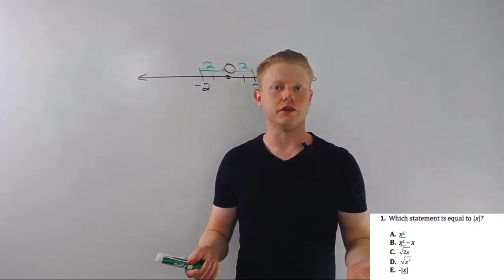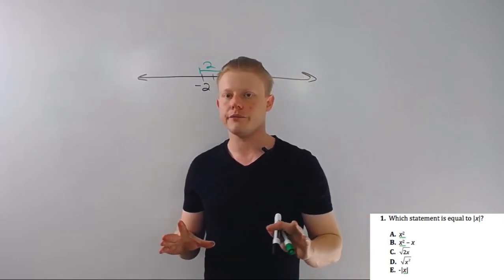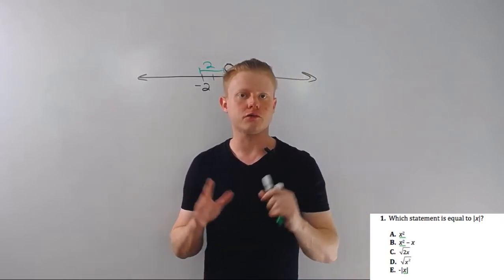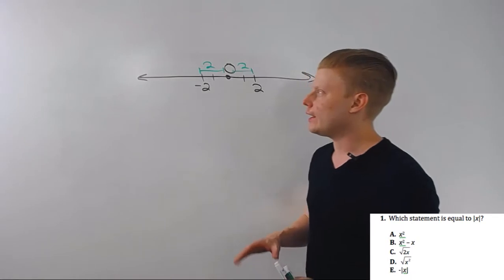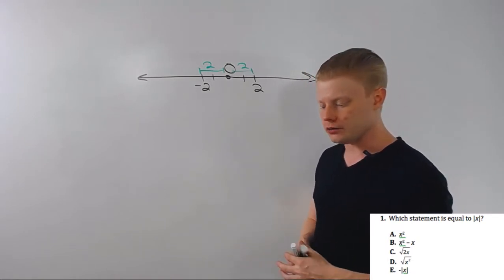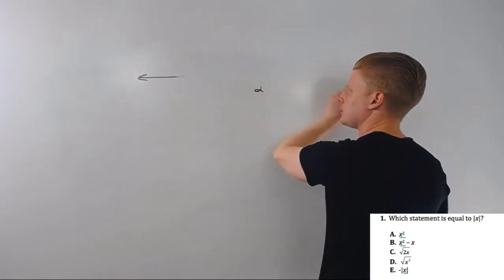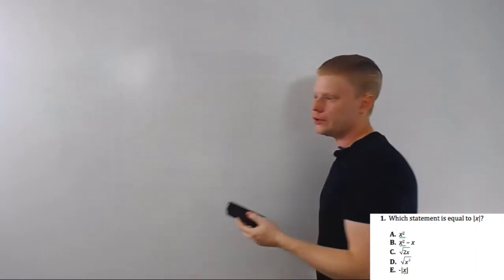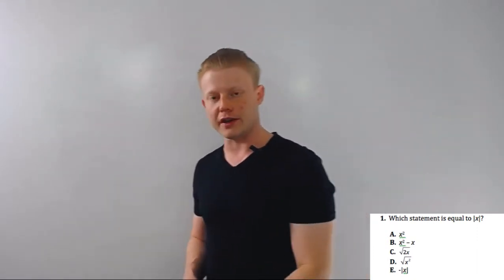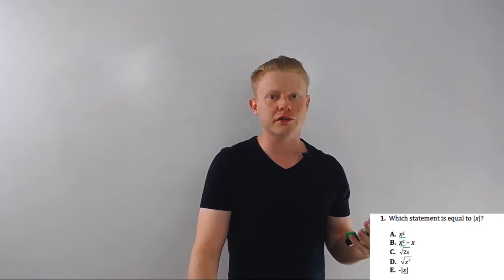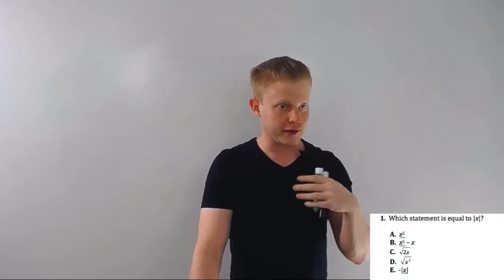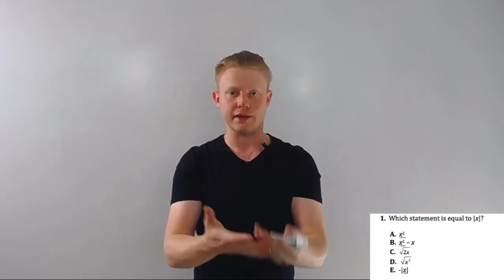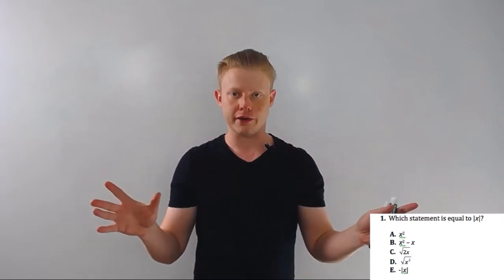All absolute value is is it flips all negatives positive, leaves zero zero. Distance is never negative, just remember that. The operations question like you just saw can be an ACT question. In fact, it's not terribly uncommon. It's one of those things that's so deceptively easy that it trips you up, and frankly it's because of the order of operations.